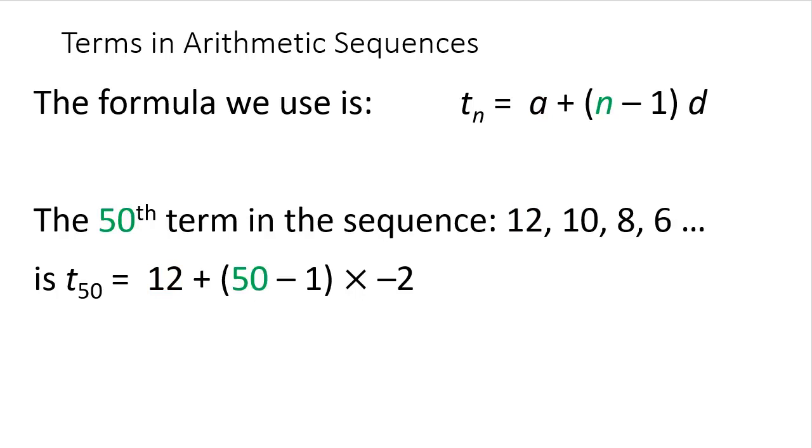We are asked to find 50 along and we are going down in 2s so the difference is negative 2. We stick that in our calculator and the 50th term is minus 86.